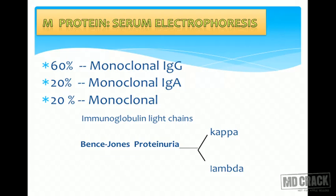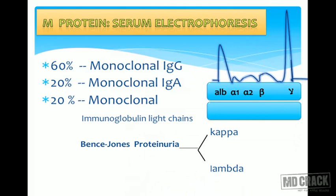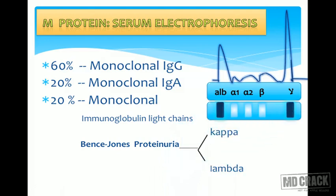Serum electrophoresis is the most important investigation in multiple myeloma. In 60% of cases, IgG levels are raised - the M protein is IgG, not IgM, so don't confuse them. In 20% of cases, monoclonal IgA is raised, and in another 20%, monoclonal light chains are raised. Bence Jones proteins are light chains - kappa and lambda - detected in urine. On serum electrophoresis, you will see a spike at the gamma portion, which is a key diagnostic finding.